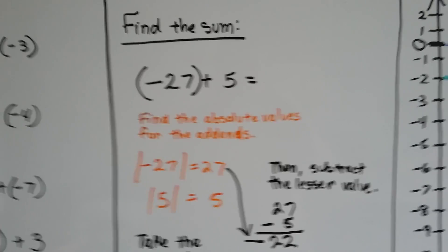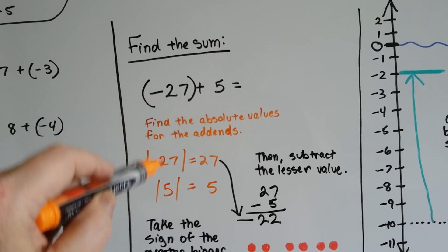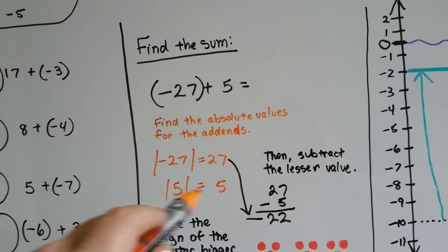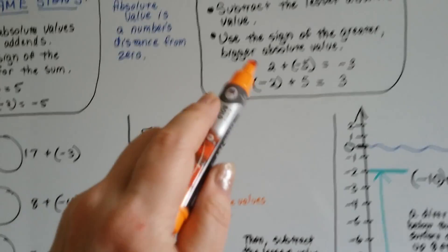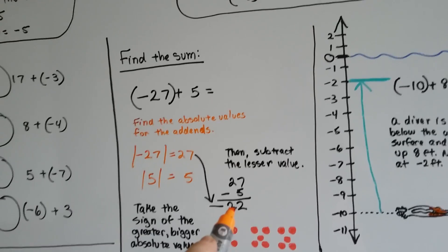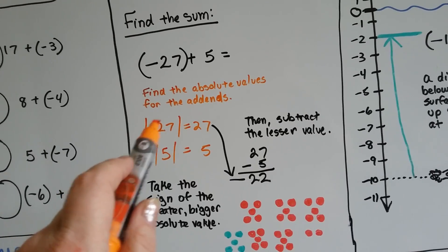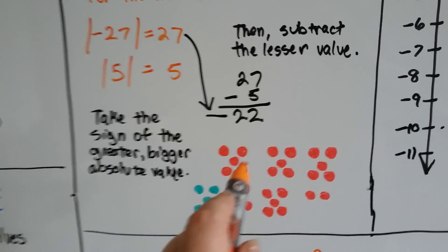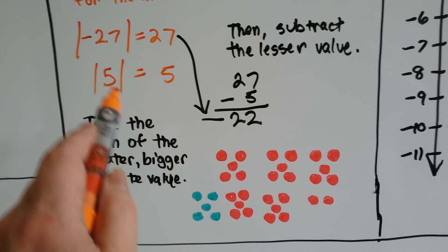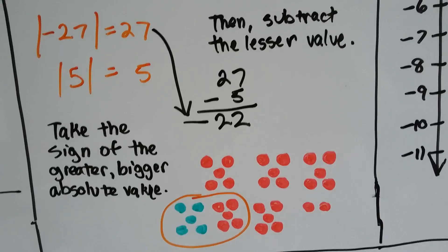We've got negative 27 plus 5. The absolute value of negative 27 is 27 — it's 27 spaces from 0. The absolute value of 5 is 5. Because they have different signs, we subtract the lesser one — the 5 from the 27 — and get 22. Then we take the sign of the greater absolute value; 27 is bigger, so we have negative 22. We had 27 negative chips; adding 5 positive chips cancels 5 of them, leaving 22 negative chips.